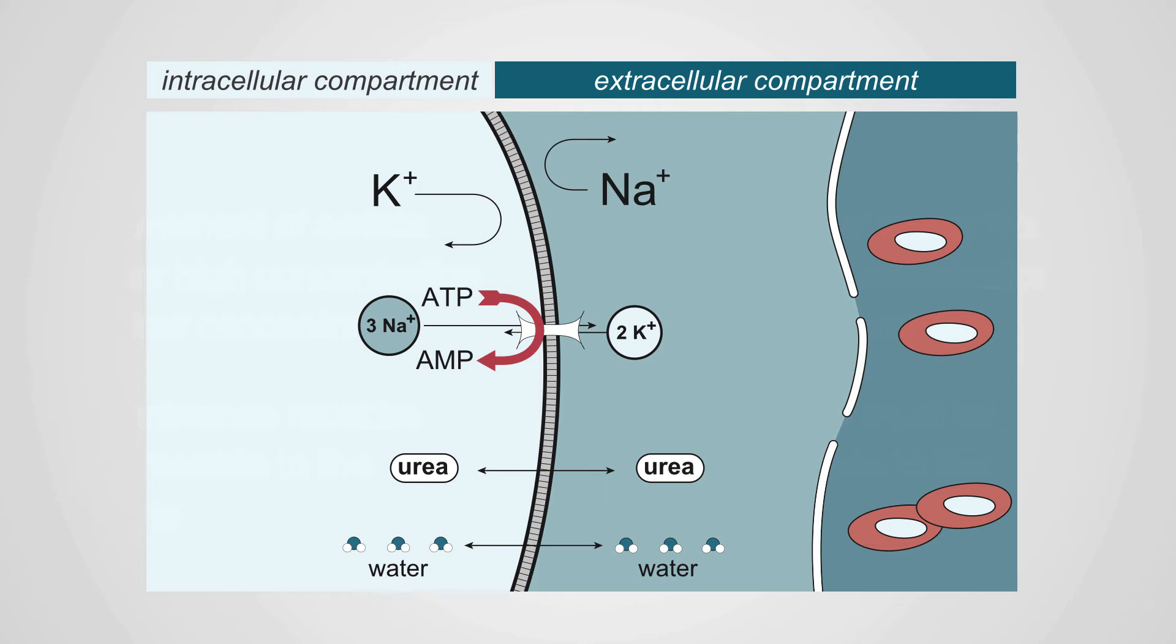The body is divided into two large compartments, an intracellular compartment and an extracellular compartment. The division between those two compartments is the cell membrane. The cell membrane is impermeable to charged particles like potassium and sodium, though they can pass through a specific sodium-potassium ATPase molecule that's found on all cells.